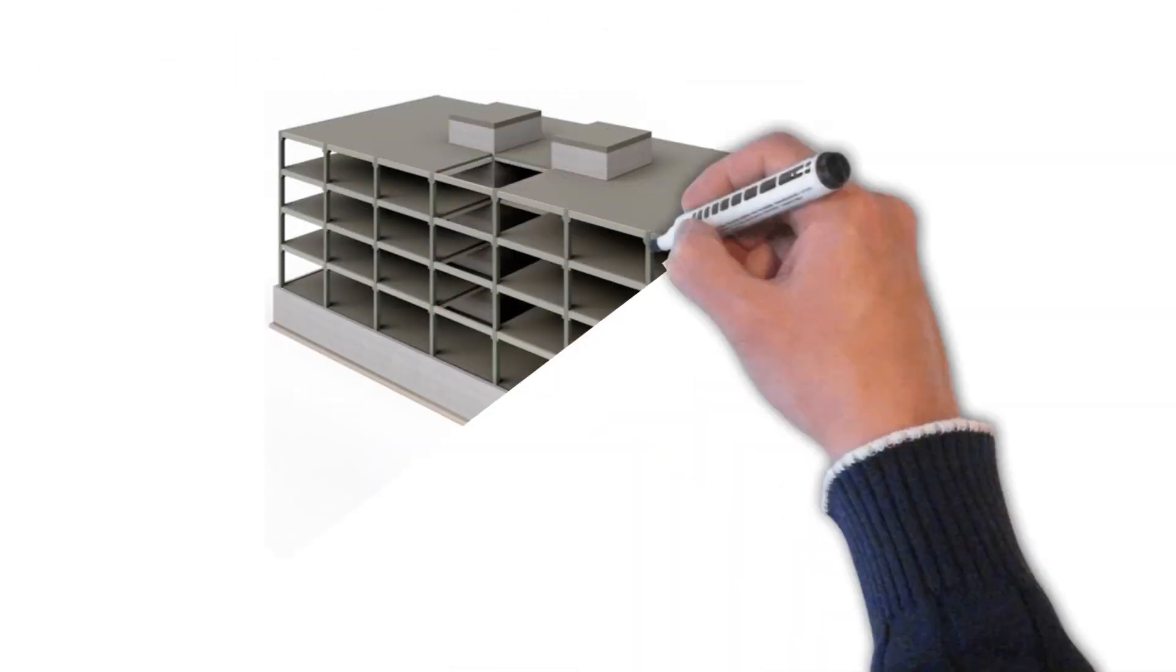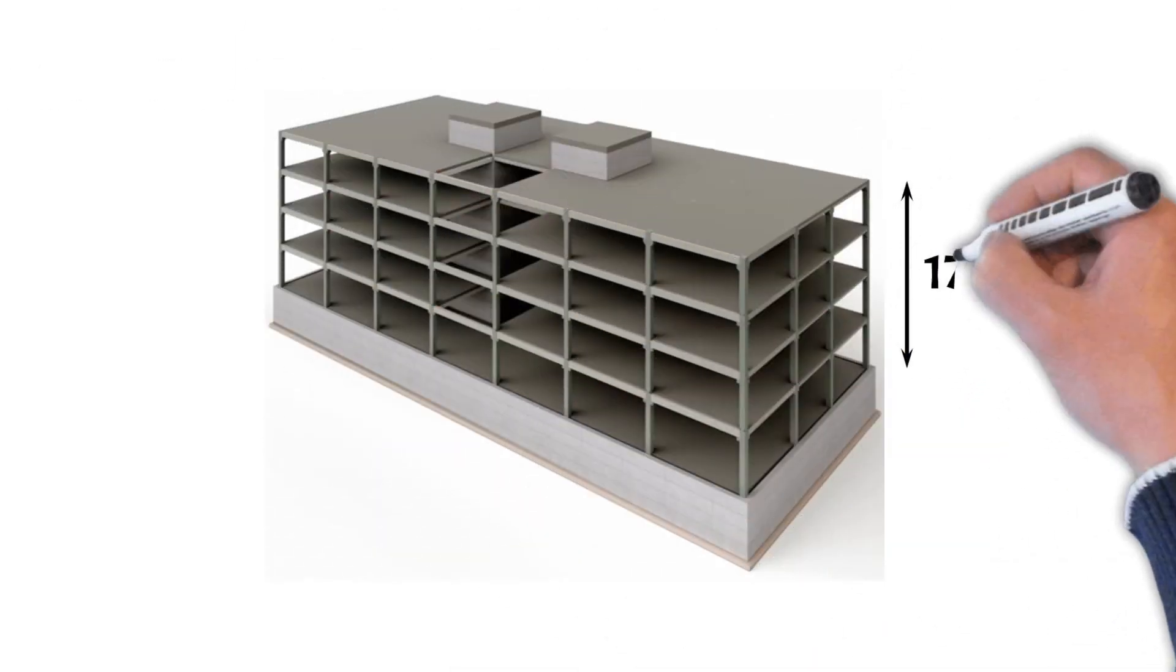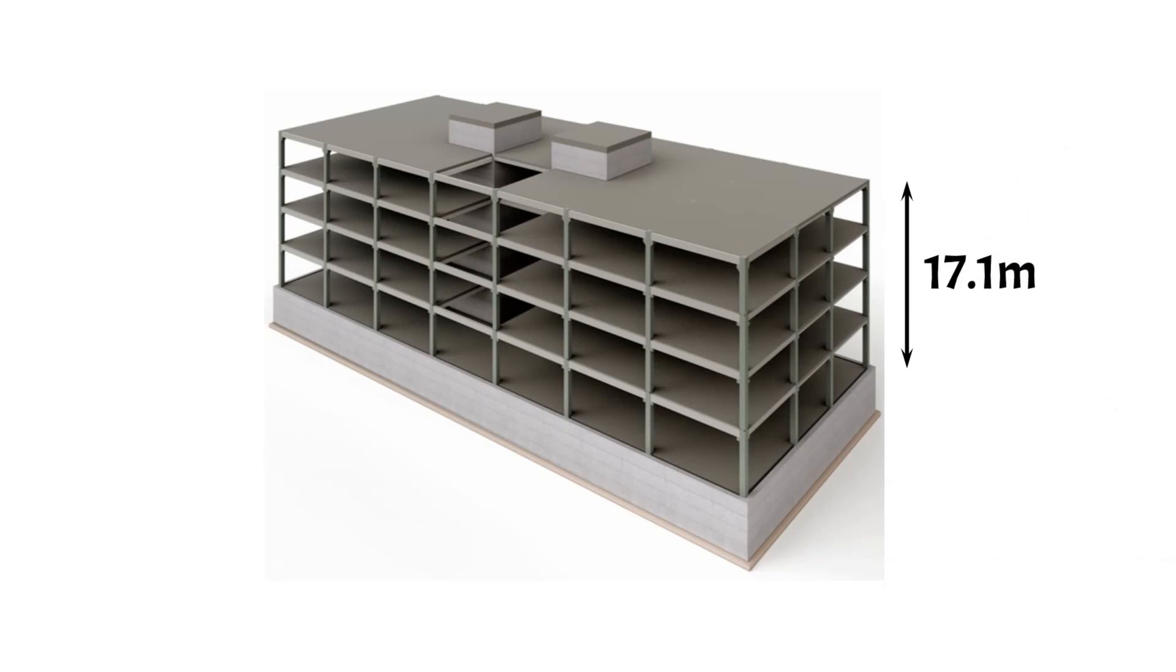To summarize, for a building with a height of 17.1 meters in a suburban area in Copenhagen, the wind load can be calculated with a peak velocity pressure of 0.75 kN per square meter.